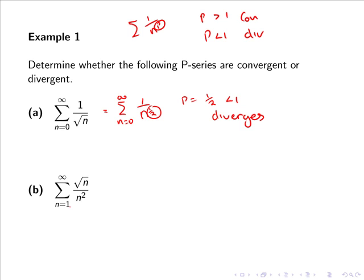In part b we have the sum from 1 to infinity of root n all over n squared. The laws of indices state that when we have a to the m over a to the n, this can be expressed as a to the m minus n.